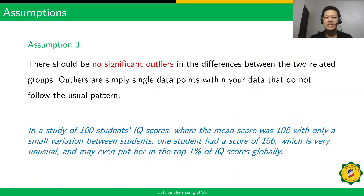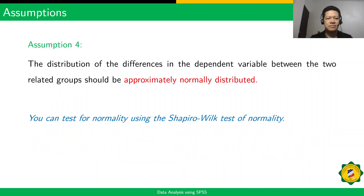The third assumption is that there should be no significant outliers in the differences between the two related groups. Outliers are simply single data points within your data that do not follow the usual pattern. The fourth assumption is that the distribution of the differences in the dependent variable between the two related groups should be approximately normally distributed.